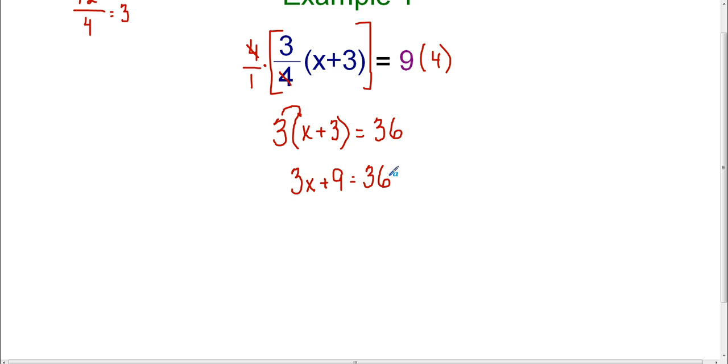Now I'm down to a very simple two-step equation. I'm going to bring down the left-hand side, so 3x plus 9, and I know that I first need to get rid of the constant, which is 9, and since it's plus 9, I know that the opposite is to subtract 9.